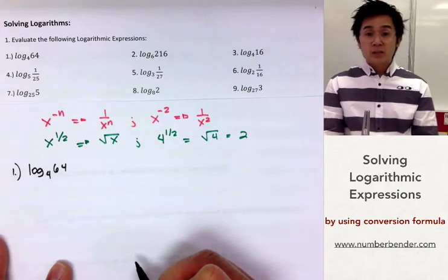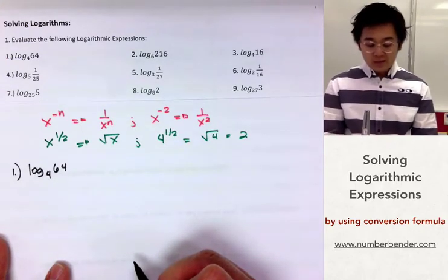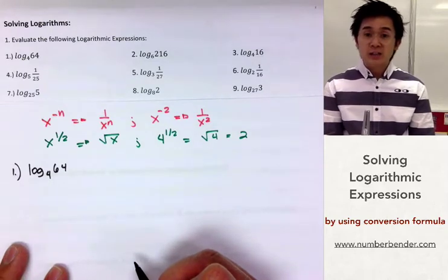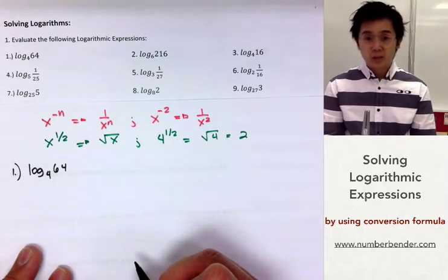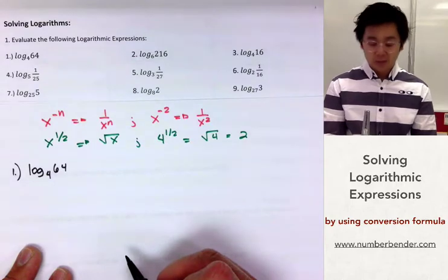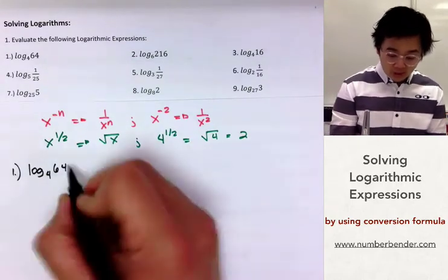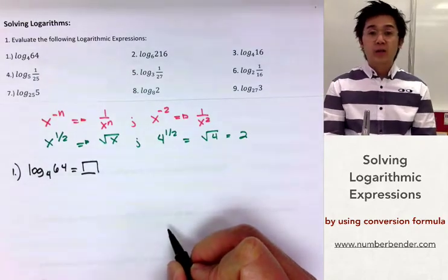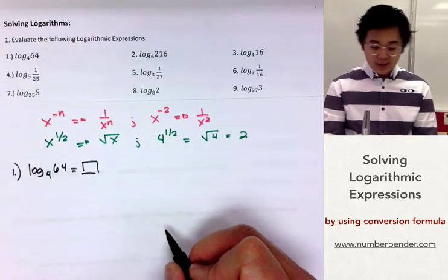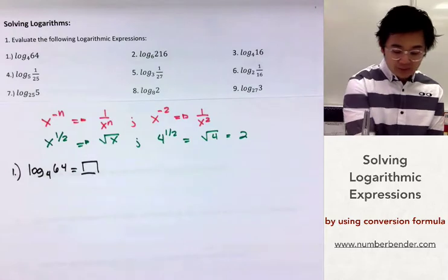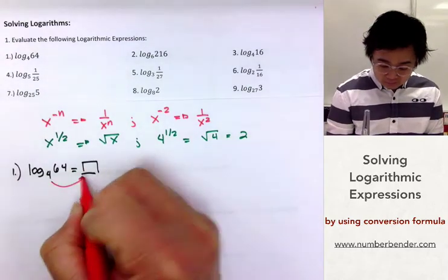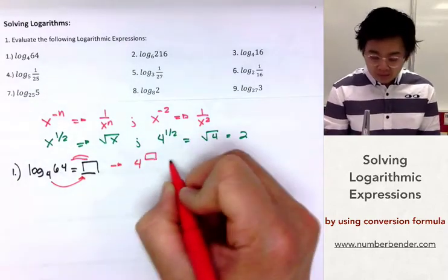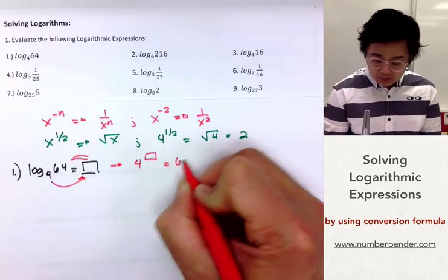Logarithm of 64 base 4 is something a little foreign to us, so let's change it into something more familiar — the inverse of log, which is exponential. By equating this to a box, we figure out the number in the box by converting it into exponential form. So now we have 4 raised to something equal to 64.